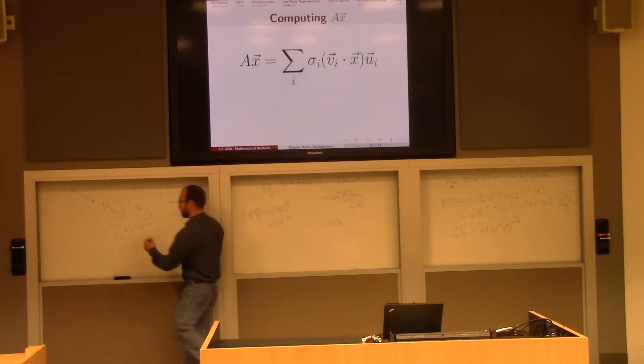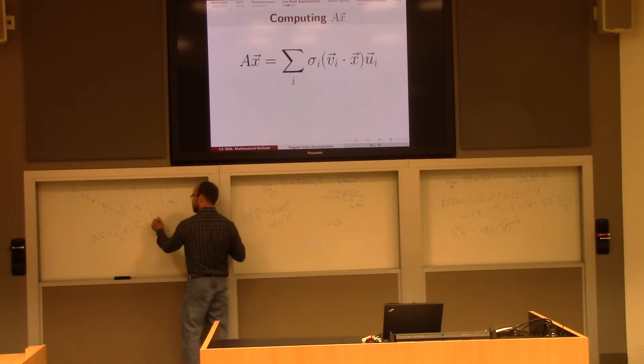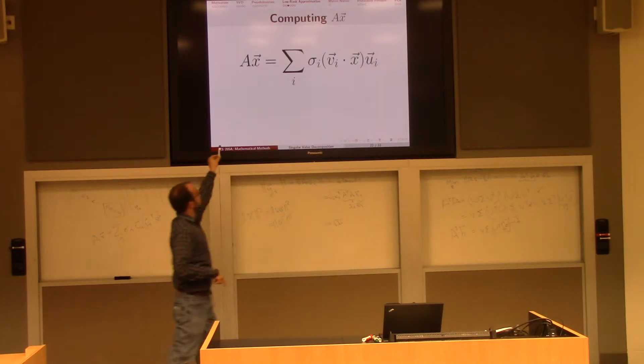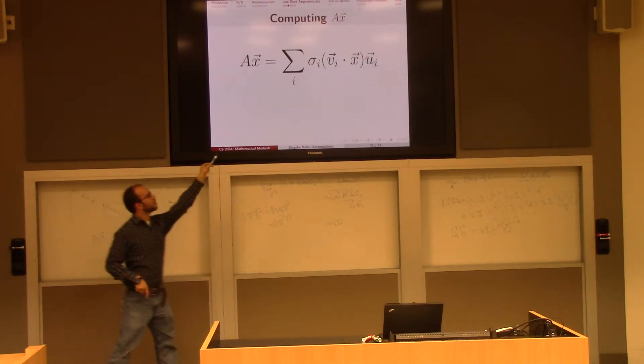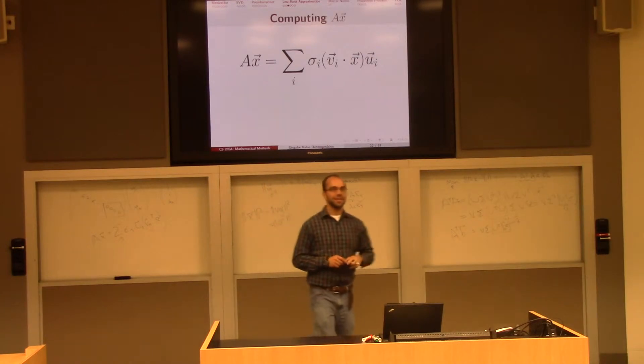So if I want, if this thing is a and I multiply it by a vector x, that's the same as multiplying this by a vector x. And now we're going to apply our favorite trick from CS 205, we're going to group differently. And this thing is nothing more than the dot product between vi and x. So in particular, if I want to get the product a times x, that's nothing more than this sum on the right-hand side. There's the dot product, and then you have these ui back on your left.